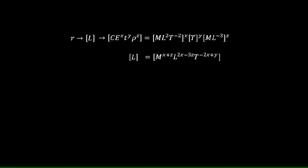Now, comparing the right-hand side and the left-hand side, we observe that there is no M present on the left-hand side. So, for obvious reasons, the power of M must be zero. The power of L on the left-hand side is one. And again, the power of t is zero on the left-hand side.